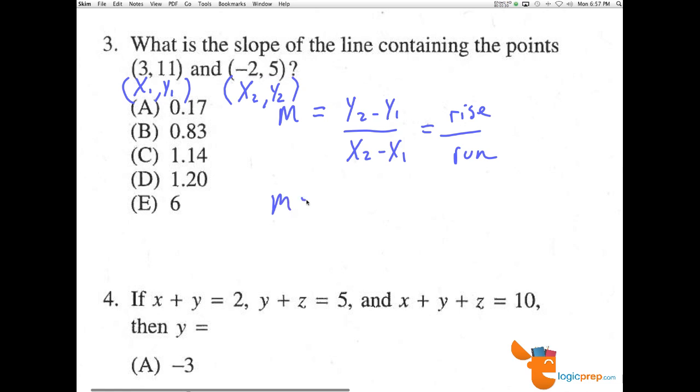Now M has to equal Y2 minus Y1, 5 minus 11, over X2 minus X1, negative 2 minus 3.